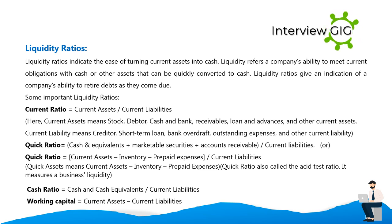Liquidity ratio formulas: Current Ratio = Current Assets ÷ Current Liabilities, where current assets include stock, debtors, cash, bank receivables, loans and advances, and other current assets; current liabilities include creditors, short-term loans, bank overdraft, outstanding expenses. Quick Ratio = (Cash and Equivalents + Marketable Securities + Accounts Receivable) ÷ Current Liabilities, also expressible as (Current Assets − Inventory − Prepaid Expenses) ÷ Current Liabilities. Also called the acid-test ratio, it measures business liquidity. Cash Ratio = Cash and Cash Equivalents ÷ Current Liabilities. Working Capital = Current Assets − Current Liabilities.